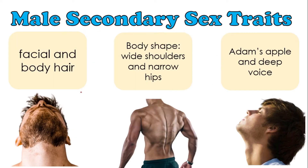Speaking of secondary sex traits, these are the changes that can be observed in males during puberty or the adolescent stage. These include: facial and body hair, changes in body shape such as wide shoulders and hips, the appearance of the Adam's apple, and the deepening of the voice.